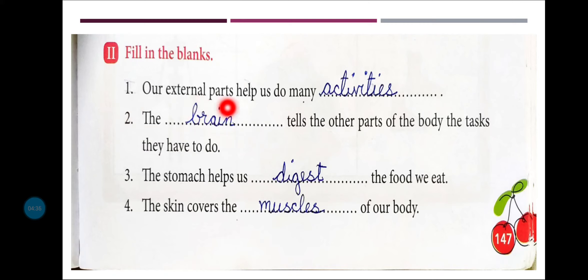Number one: 'Our external parts help us do many ___.' Answer: activities. हमारे external parts हमें बहुत सी activities करने में मदद करते हैं — जैसे writing, reading, cooking, jumping, playing। Eyes देखने का काम करती हैं, ears सुनने का काम करते हैं, hands writing करते हैं, आँखें reading करती हैं, legs walking करते हैं। इस तरह हमारे external parts हमें different activities करने में help करते हैं।